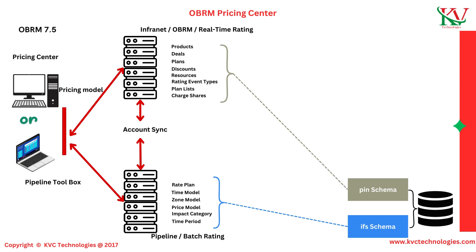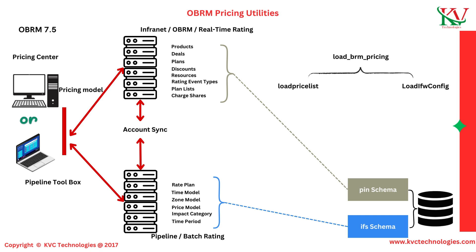If we want to export pricing data related to real-time rating from one environment to another, there is a utility in OBRM server called load_pricelist. With this utility we can extract price plans from the OBRM server and move them to another environment, for example from development or UAT to pre-production or production. Similarly, Pipeline Server has a utility called loadifwconfig, which uses the IFW schema in OBRM DB. Load_pricelist is for real-time rating and loadifwconfig is for batch rating.